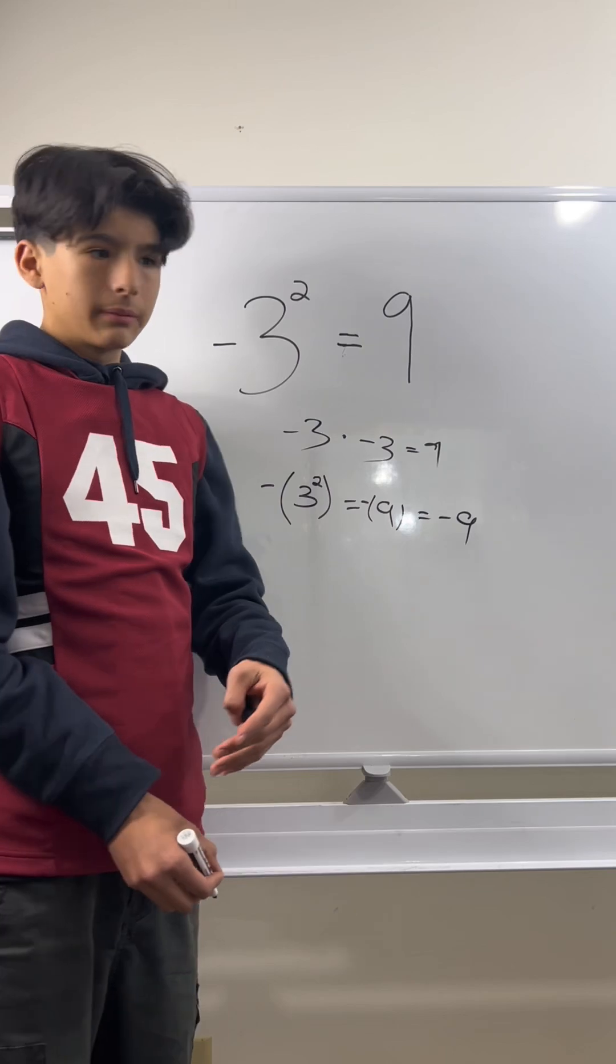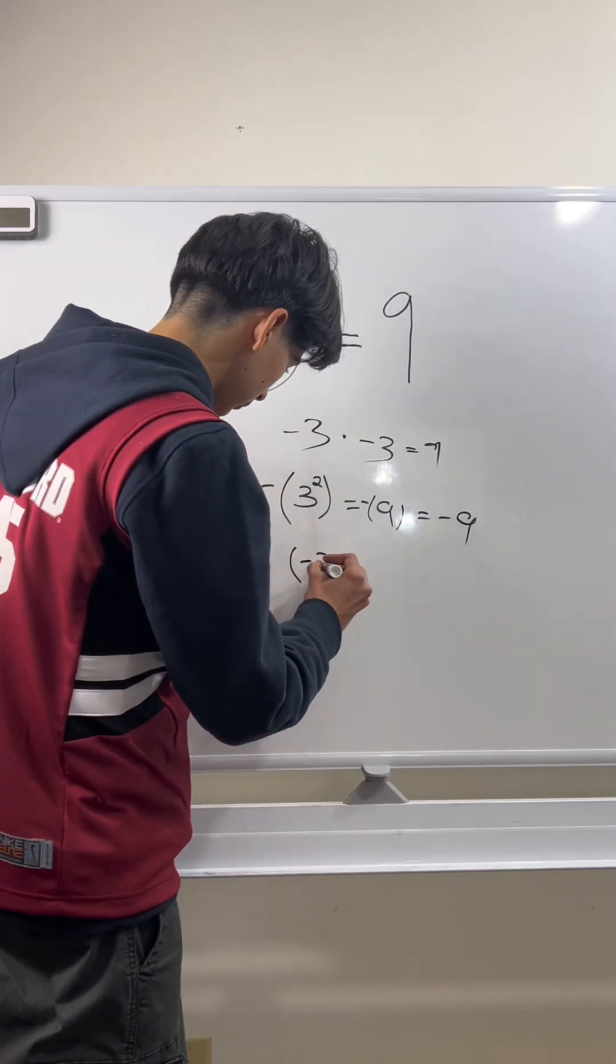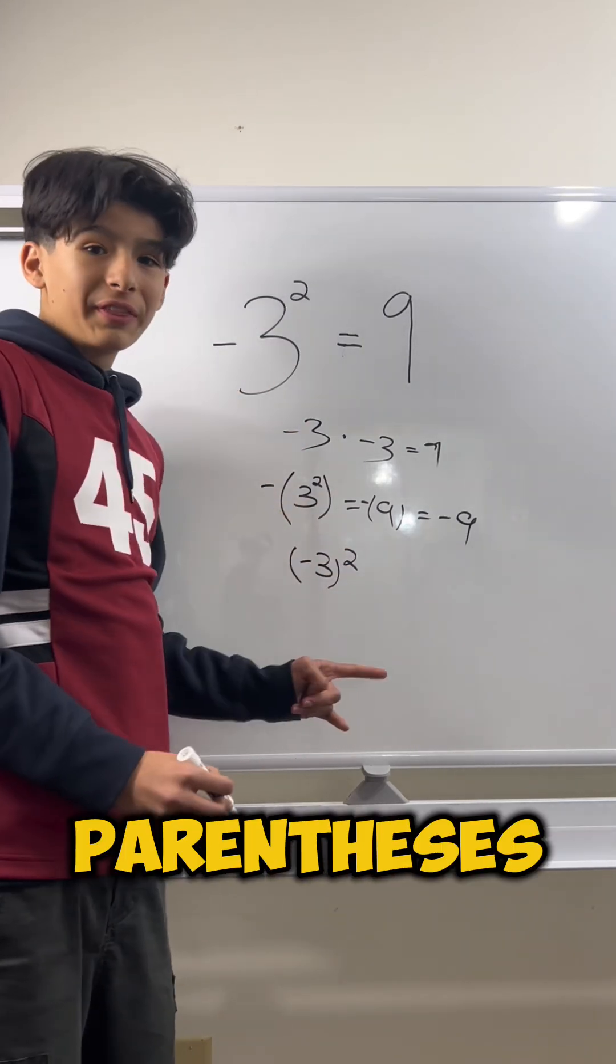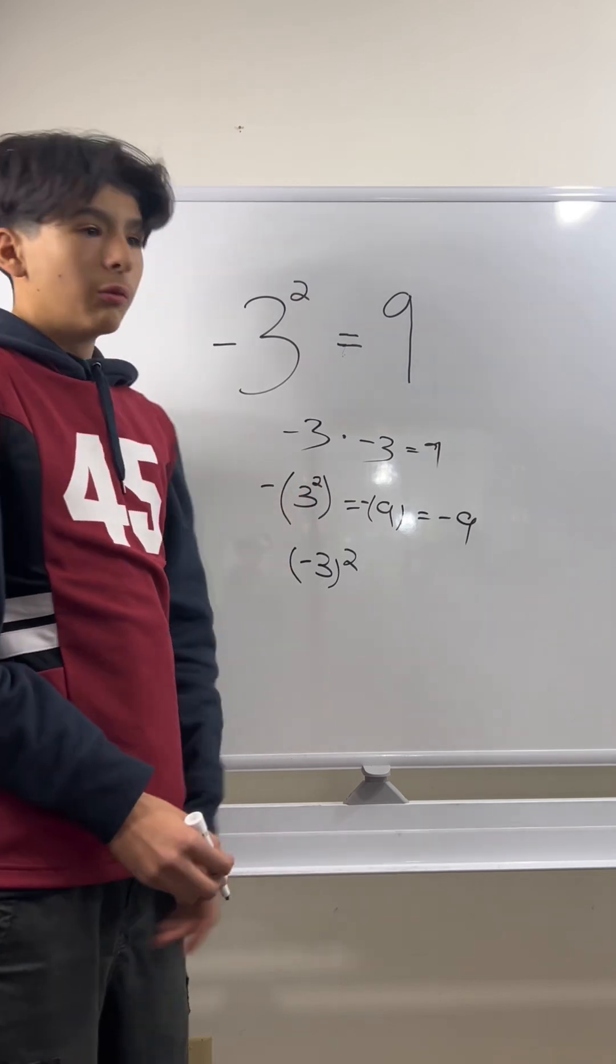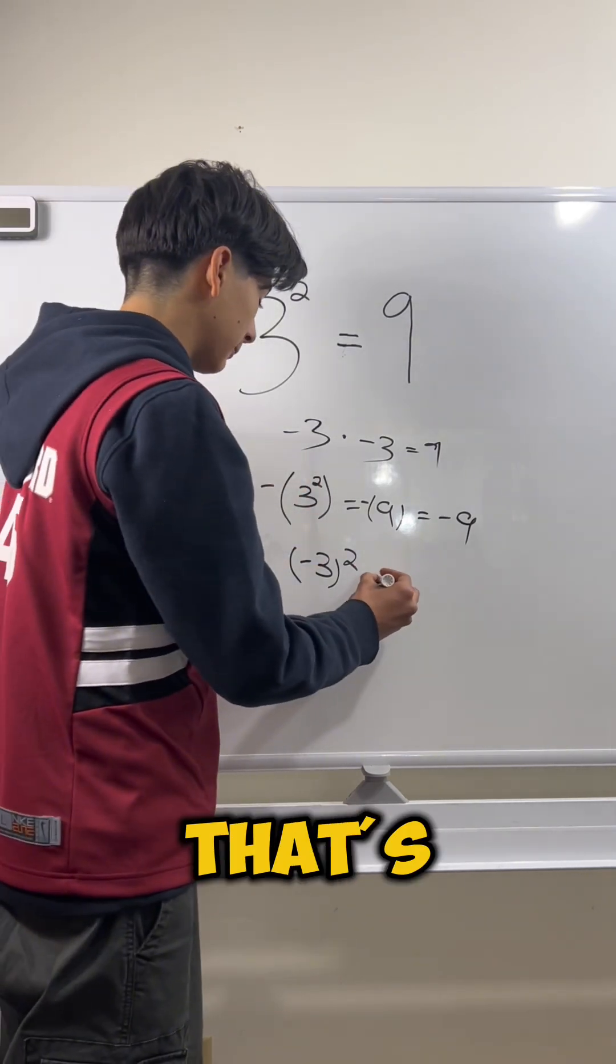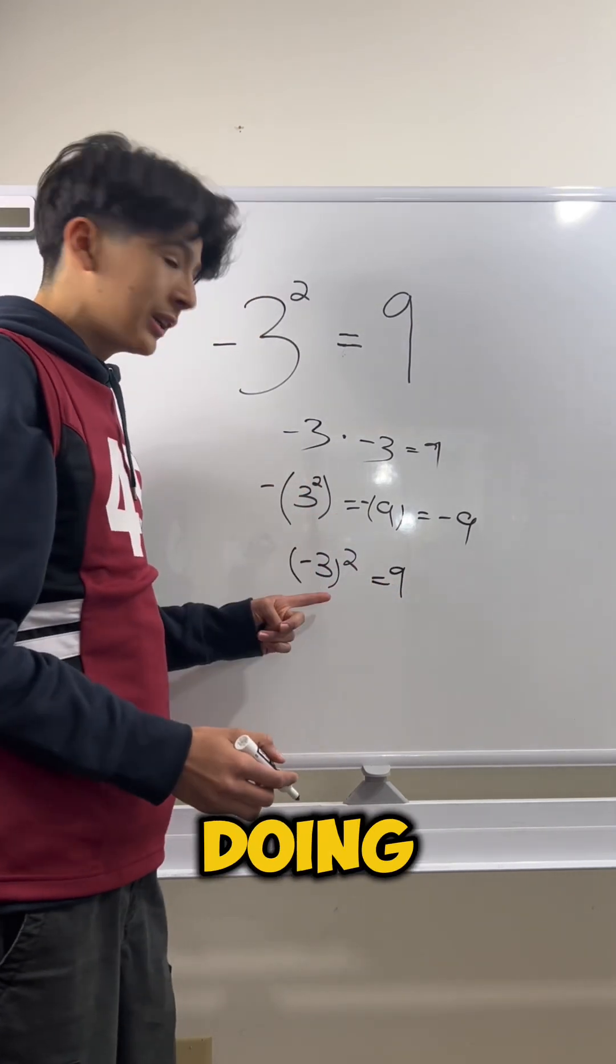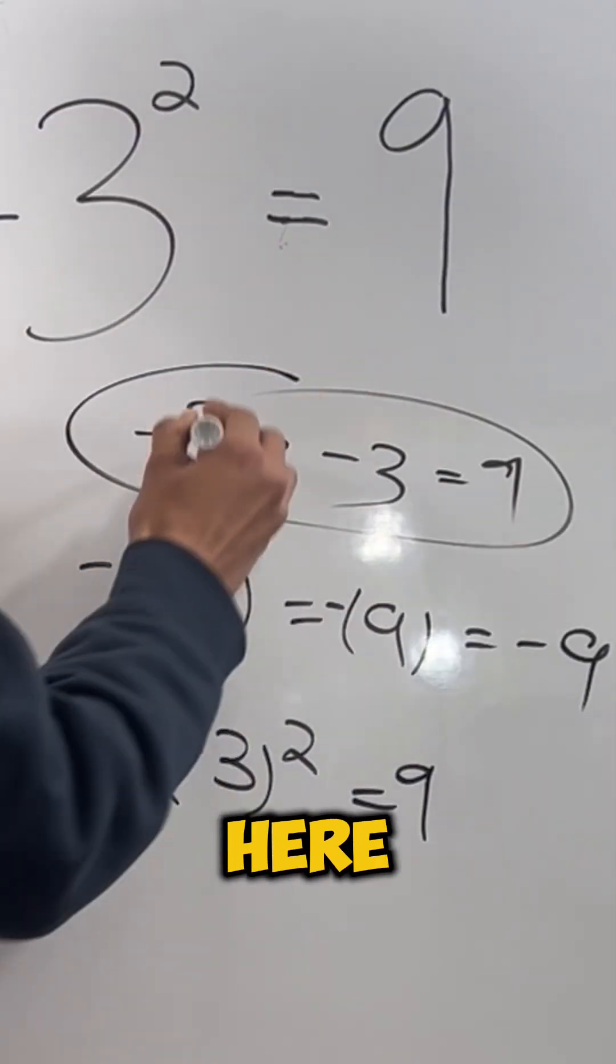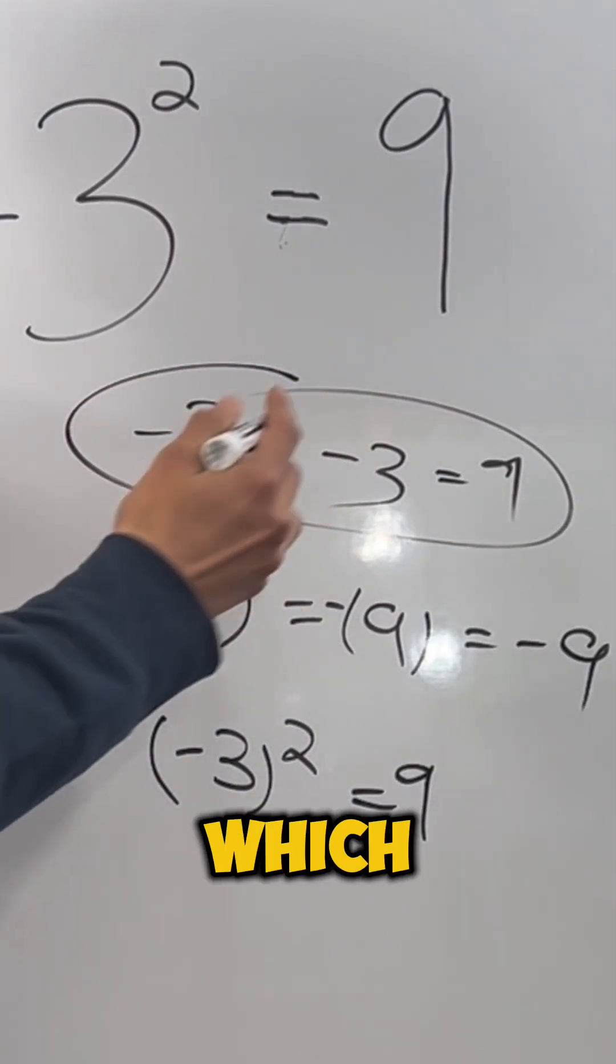But what happens when you have this? In the parentheses, you have the negative 3. Well, that is 9. That's positive 9. Because what you're doing here is just what we did up here. Negative 3 times negative 3, which is 9.